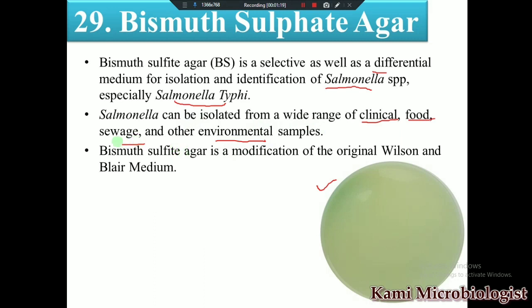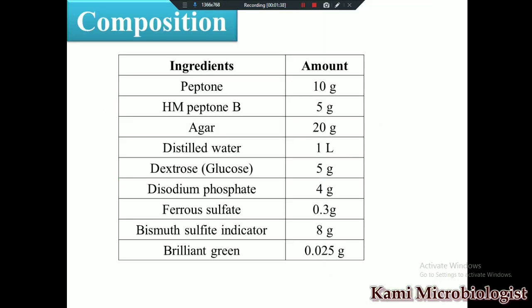This bismuth sulfate agar medium is also called the Wilson and Blair medium because it was formulated and discovered by these two scientists, Wilson and Blair. That's why it is also known as the Wilson and Blair medium. Now let's look at the composition of this medium.